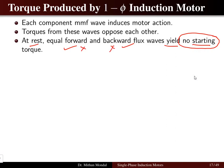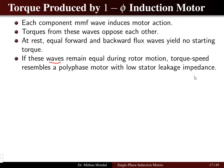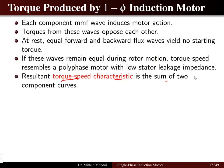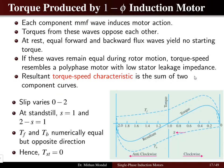If the forward and backward MMFs remain equal during rotor motion, the torque-speed characteristic resembles a polyphase motor with low stator leakage impedance. The resultant torque-speed characteristic is the sum of the two component curves — the forward MMF and backward MMF are combined to give the torque-speed characteristic of the single-phase induction motor.